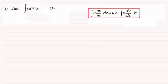Looking at this problem, I'm going to take u as x, purely because when I differentiate this, it will become 1, leaving me with a very simple integral. That means e to the power 4x will be my dv by dx.